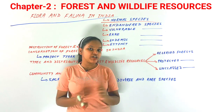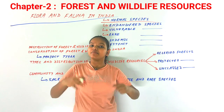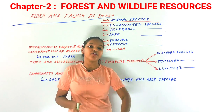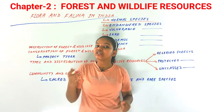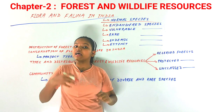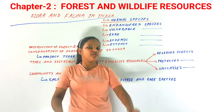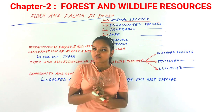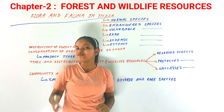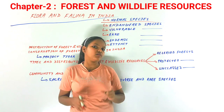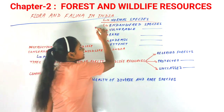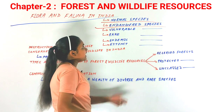The first type is Normal Species — those whose population is sufficient for their survival. Examples in India include sal, pine, and rodents, as well as cattle and livestock that we have domesticated. Their population is adequate for their survival in our country.